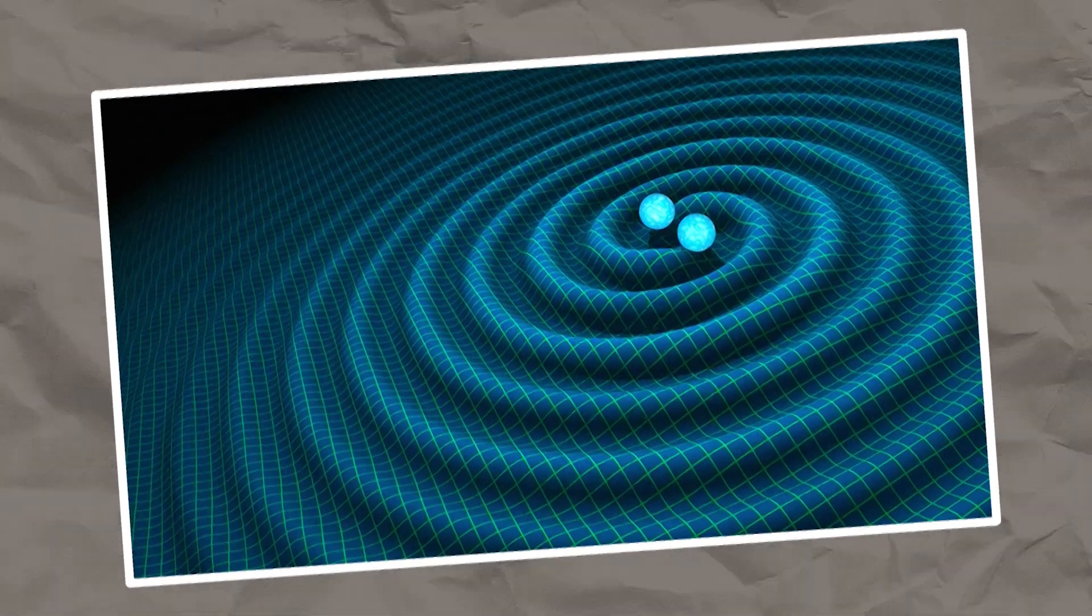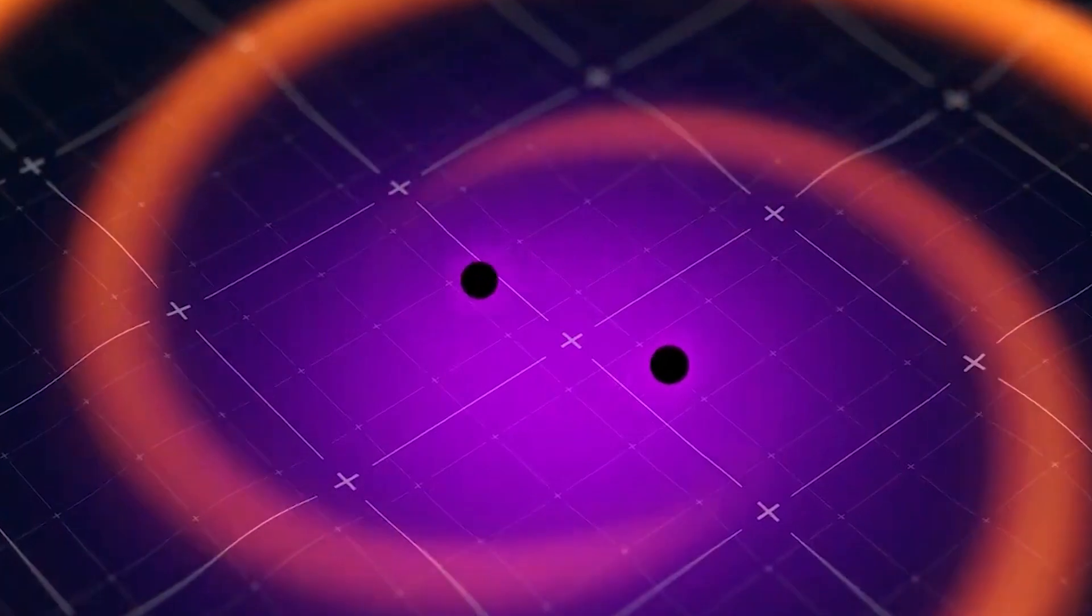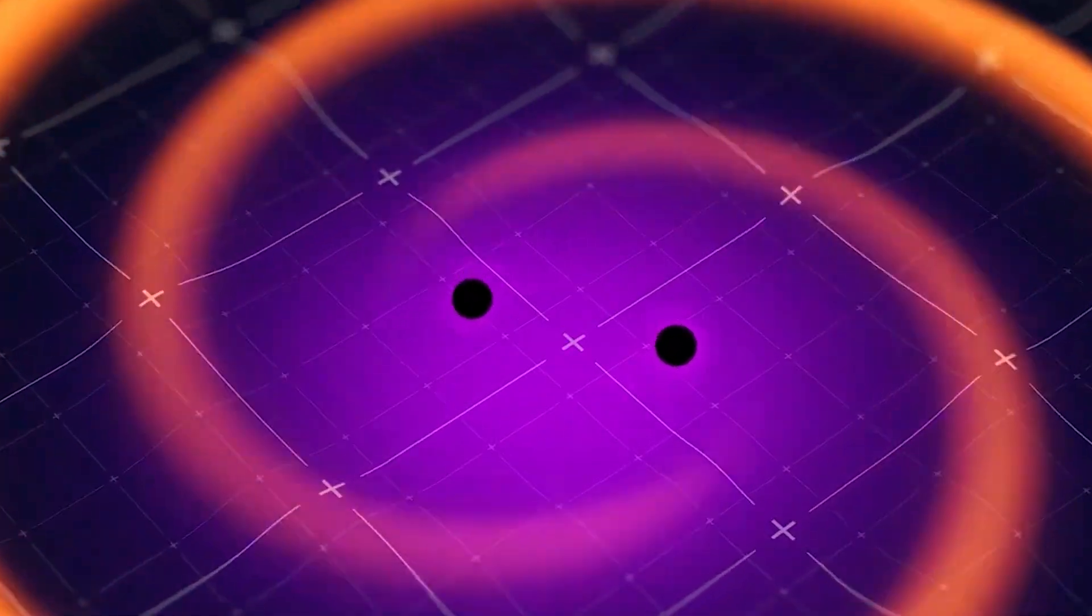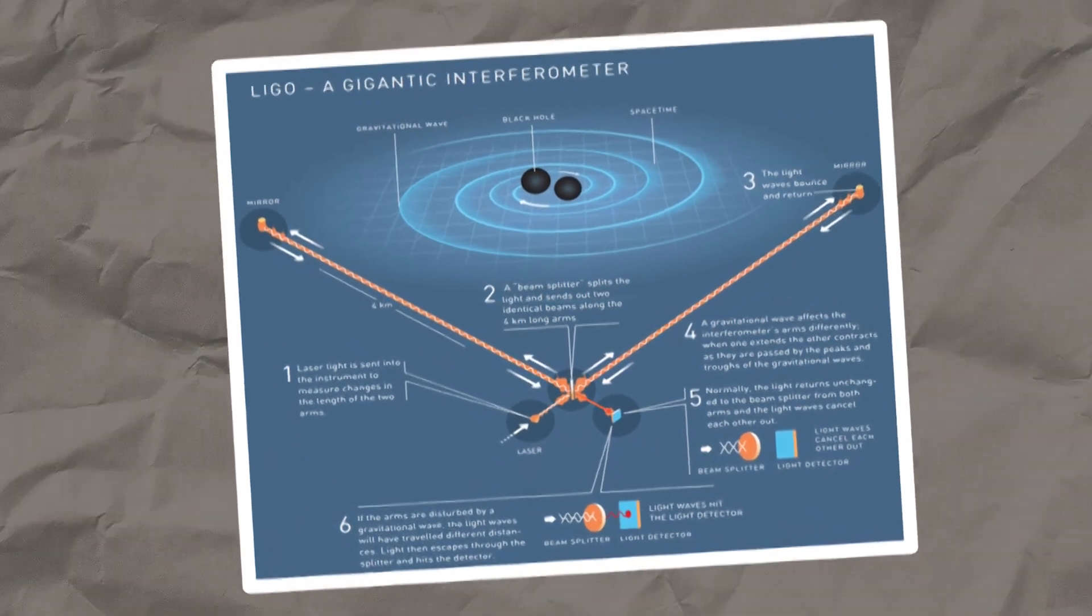Another fascinating aspect of general relativity is the prediction of gravitational waves, ripples in the fabric of space-time that travel at the speed of light, produced by violent cosmic events such as colliding black holes or neutron stars. These waves were directly detected by the LIGO and Virgo observatories, a century after Einstein predicted them, confirming yet another aspect of the theory.